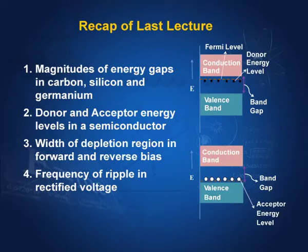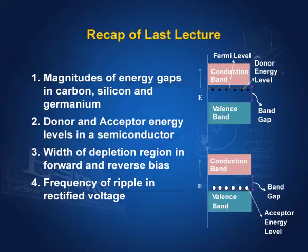In the last lecture, we had many examples through which I tried to explain the concepts learned in this part of the course. We learned that the donor energy level is very close to the conduction band, and the acceptor energy level is very close to the valence band. We also learned that diamond is an insulator with an energy gap of the order of 5.5 electron volts, silicon has a gap of 1.1 electron volts, and germanium has 0.7 electron volts.